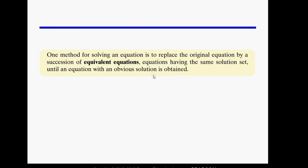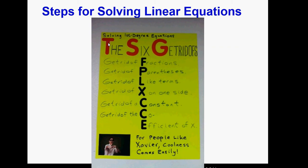We try to make equivalent equations by doing the same things to both sides. If you have a linear equation and you do the same thing to both sides, the new equation is true, and equivalent equations have all the same solutions.